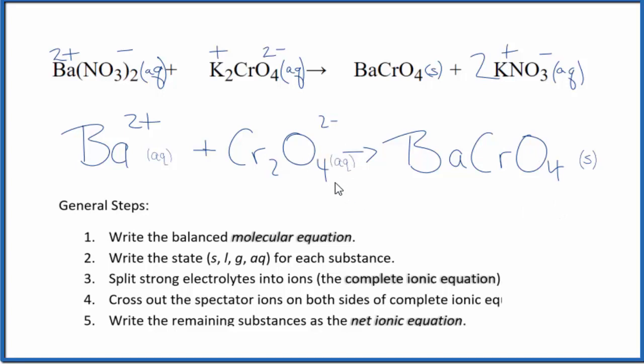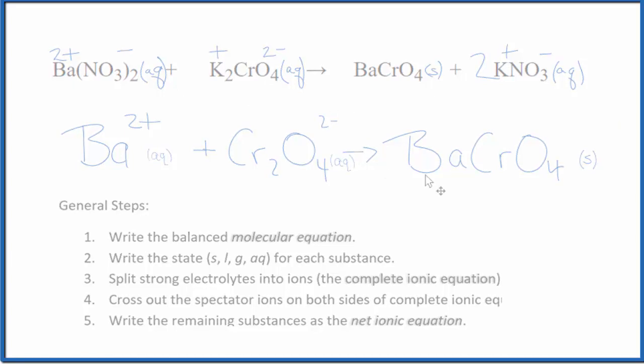That's it. This is the balanced equation for barium nitrate plus potassium chromate. And this is Dr. B. Thanks for watching.